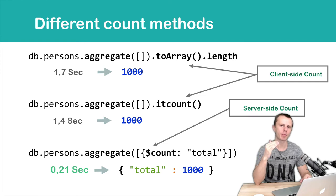In the last example, the server performs the count operation and returns us back just the result, total 1000. It will not return any documents, just the count. That's why this method is so quick.